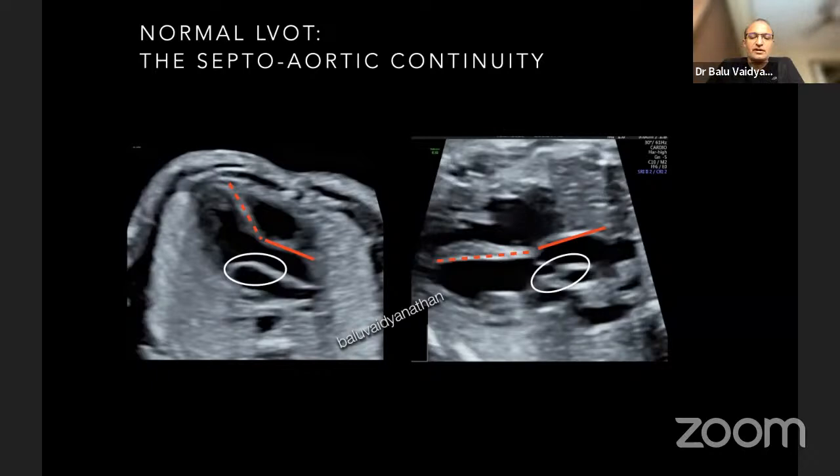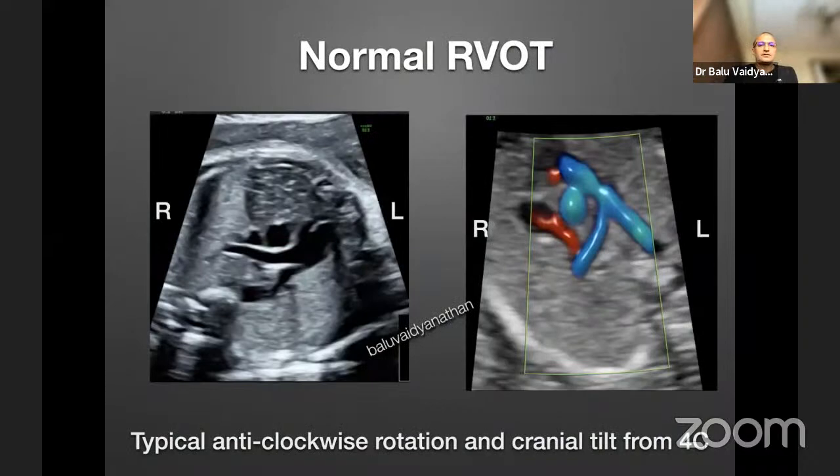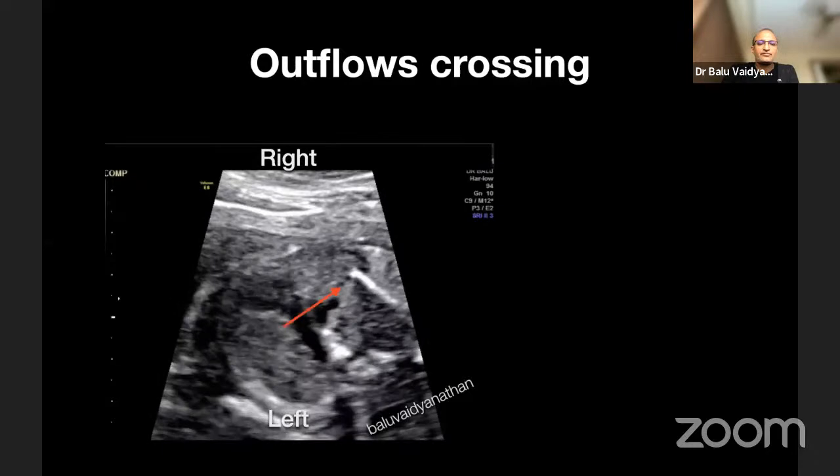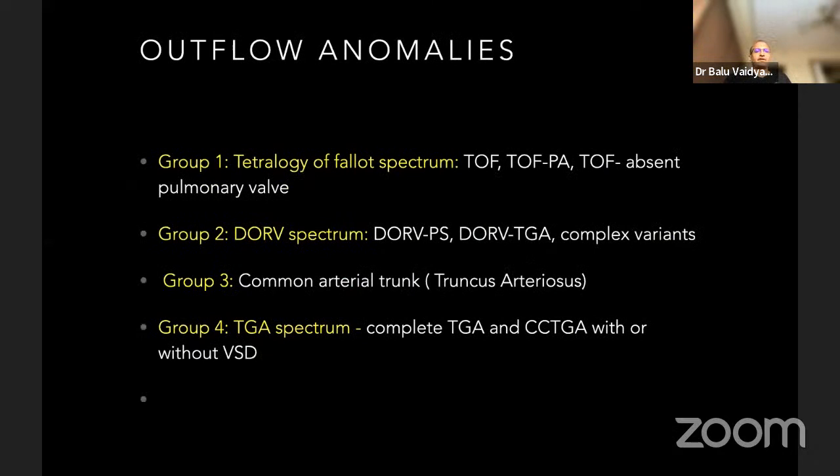Now this is the RVOT, and we saw the outflow tracks crossing. These are the three basic concepts in the outflow track views which we want to see. Let us look at the various anomalies and see how these things differ. The important four lesions we need to understand in the outflow anomaly group are: the tetralogy of Fallot spectrum, the double outlet right ventricle spectrum, the common arterial trunk, also called truncus arteriosus, and transposition.